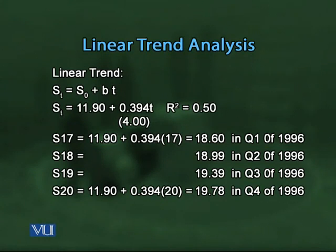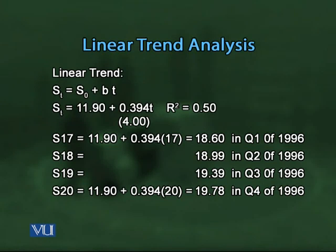The forecasted electricity sales for 1996 are: first quarter — 18.60 million kilowatt hours, second quarter — 18.99, third quarter — 19.39, and fourth quarter — 19.78. The R-squared value is 0.50, indicating that 50% of the variation is explained by time in this model.